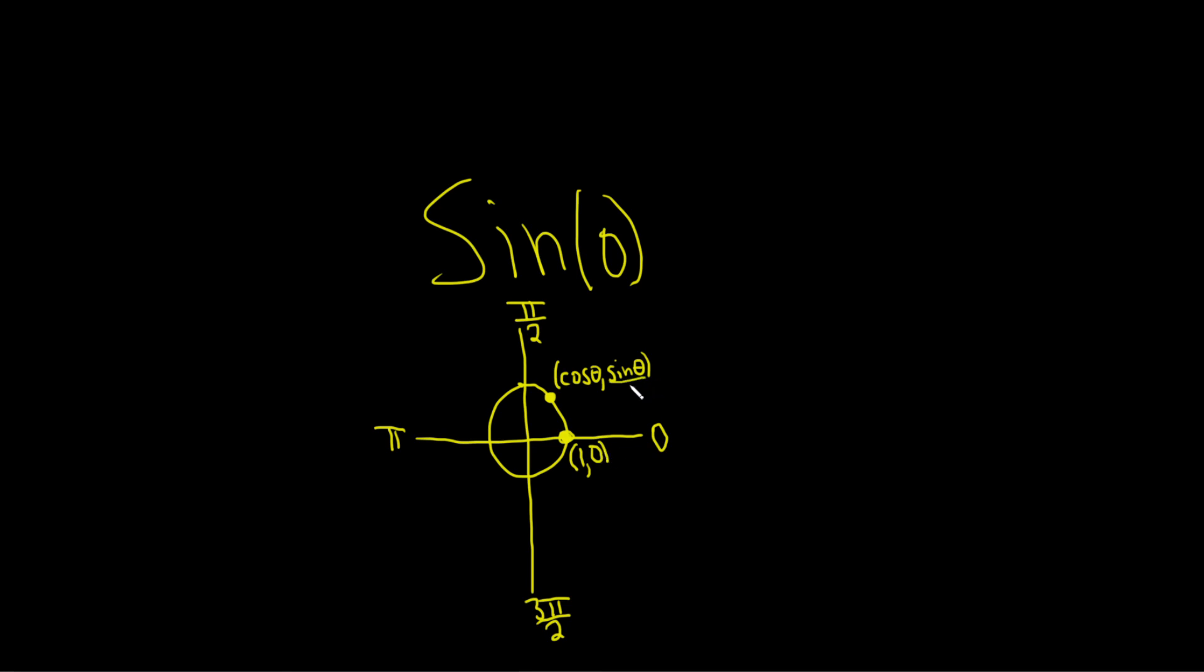Sine is the y coordinate on the unit circle. So you see that the y coordinate here is 0, therefore the sine of 0 is equal to 0.